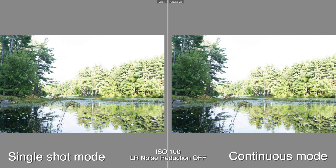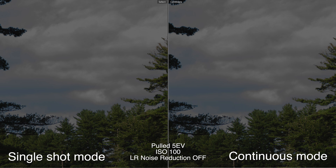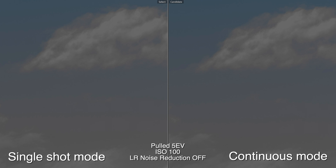I overexposed this next shot quite a bit to check on the highlight recovery of both files. Bringing it way down in Lightroom, the highlight details look about the same on both shots. That's great news because I can deal with a bit of lost shadow dynamic range, but clipping highlights can just be nasty depending on what you're shooting.